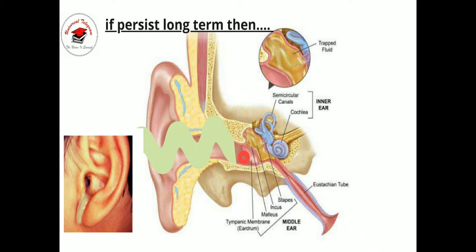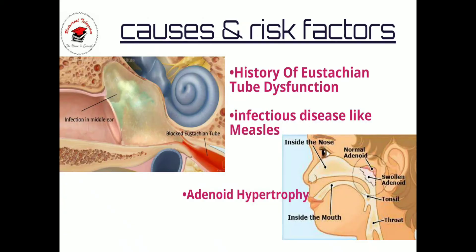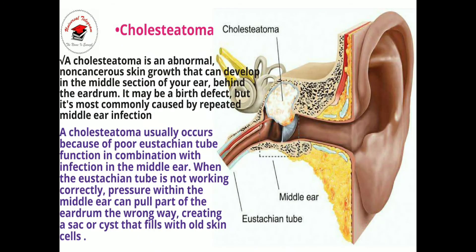What are the causes and risk factors of CSOM? The first ones are history of Eustachian tube dysfunction, infectious diseases like measles, adenoid hypertrophy, and cholesteatoma. As you can see in the picture, a cholesteatoma is an abnormal non-cancerous skin growth that can develop in the middle section of your ear behind the eardrum. It may be a birth defect but is most commonly caused by repeated middle ear infection.